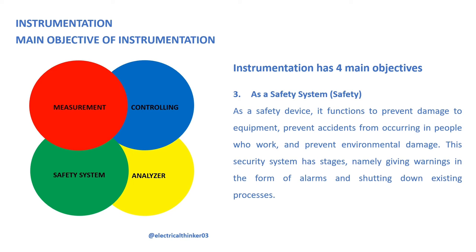Three, as a safety system. As a safety device, it functions to prevent damage to equipment, prevent accidents from occurring to people who work, and prevent environmental damage. This security system has stages, namely giving warnings in the form of alarms and shutting down existing processes.